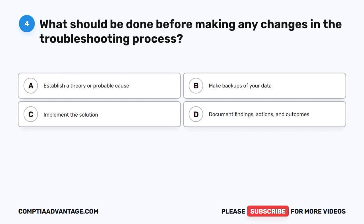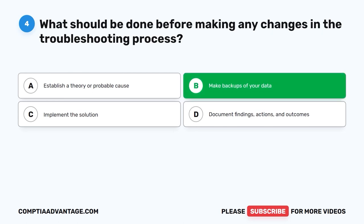Question 4. What should be done before making any changes in the troubleshooting process? A. Establish a theory or probable cause. B. Make backups of your data. C. Implement the solution. D. Document findings, actions, and outcomes. The correct answer is B. Make backups of your data.